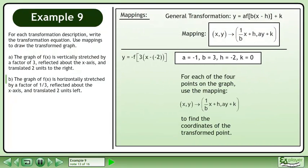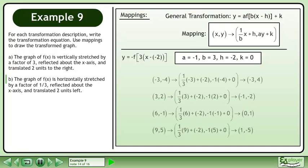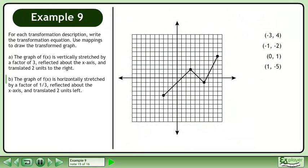For each of the four points on the graph, use the mapping shown to find the coordinates of the transformed point. The mapping calculations for the four points are shown. Plot the transformed points. Finally, draw the graph.